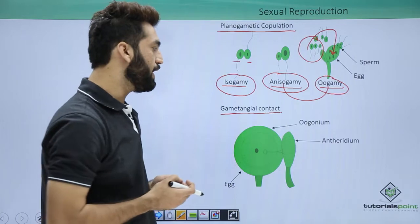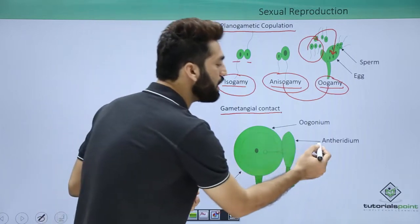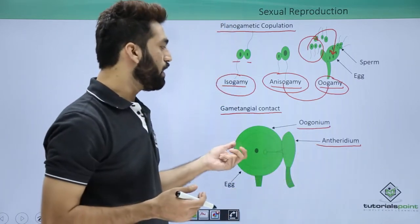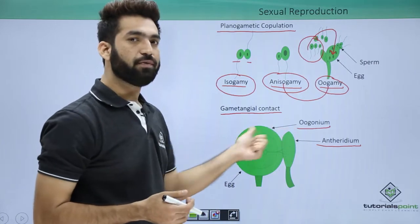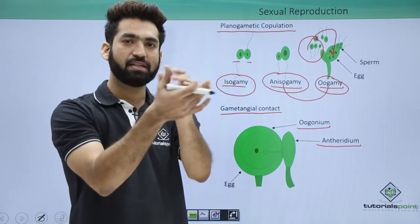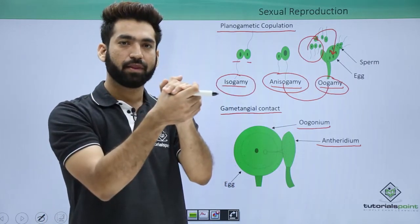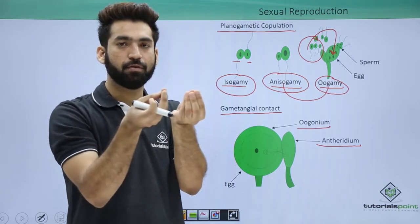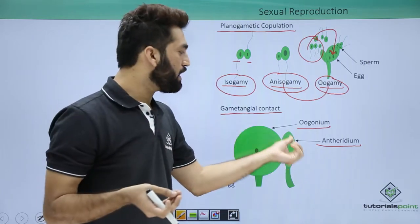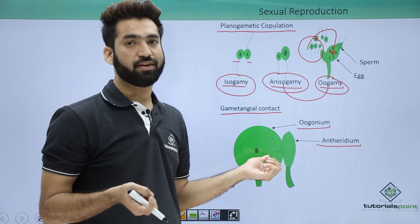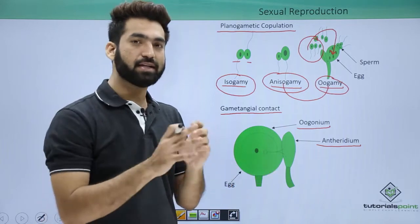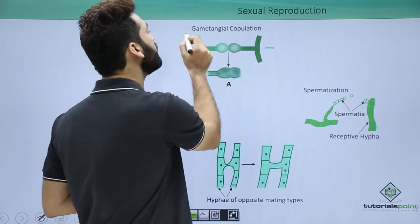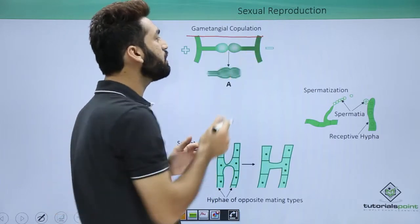The second method is called gametangial contact. The male gamete structure is called antheridium and the female gamete structure is called oogonium; the egg is formed inside the oogonium. Both gametes combine with the help of a fertilization tube, through which the male gamete is transferred to the female part.